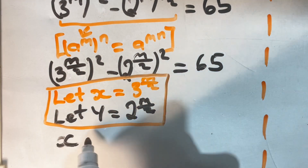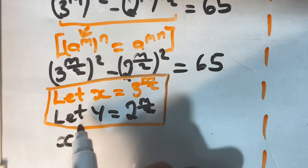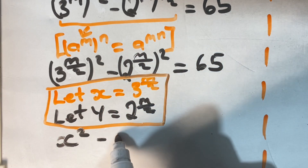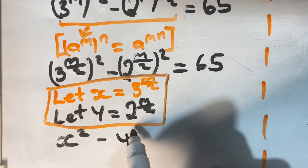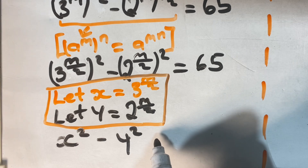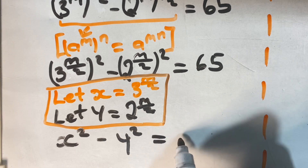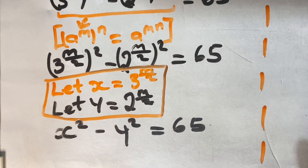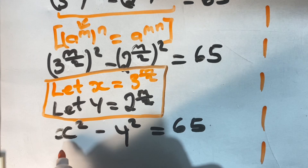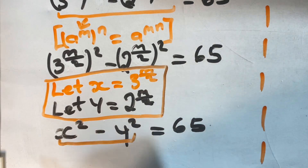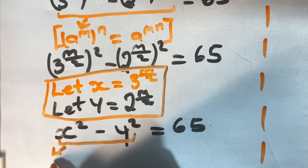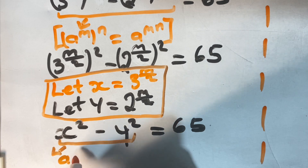So let's look at what we have here. We have x to the power of 2, so we have x squared minus y squared, giving us x squared minus y squared is equal to 65. And if you look closely you'll see another index law coming out — what is called the difference of two squares.